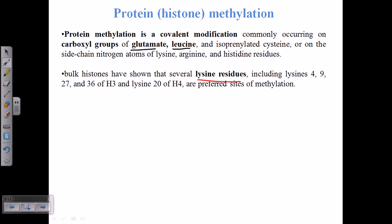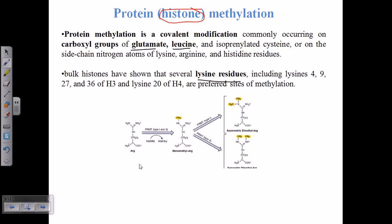When we talk about protein methylation, we are more interested in histone methylation, because histones are the proteins that help DNA wrap around itself. Histones have many lysine residues on the outside, because positively charged lysine residues are required for wrapping of the negatively charged DNA. So since the methyl group can be attached to lysine residues, it is much easier to methylate histone proteins.